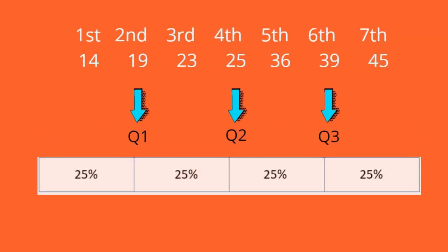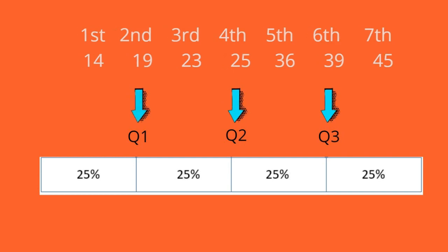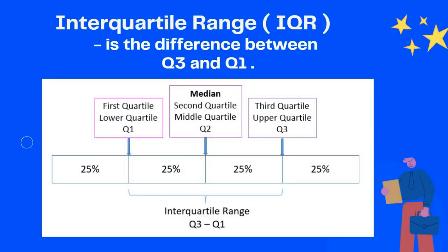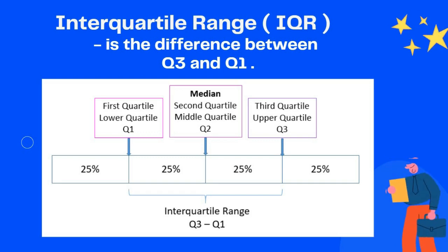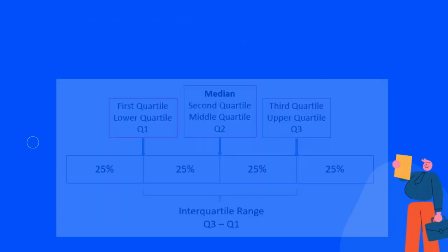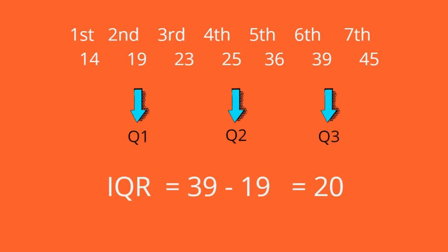Therefore, quartile one is 19, quartile two is 25, and quartile three is 39. Now let us have another term: the interquartile range or IQR. This is the difference between quartile three and quartile one. Since quartile one is 19 and quartile three is 39, the IQR is equal to 39 minus 19, which is equal to 20.